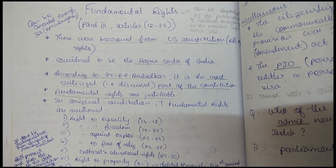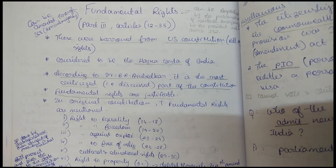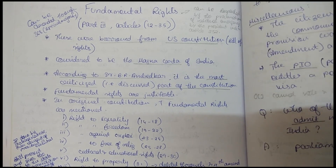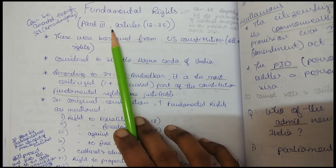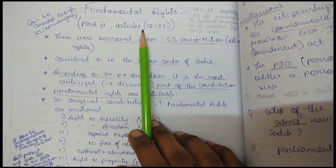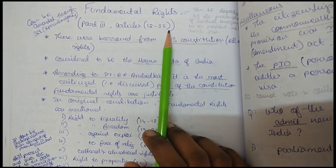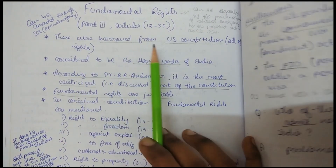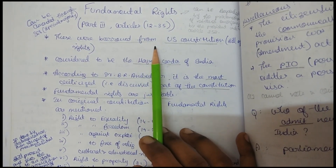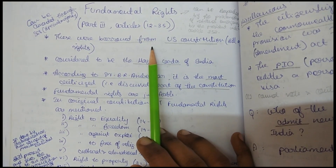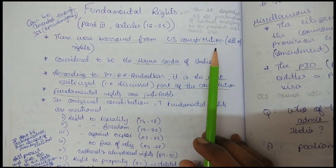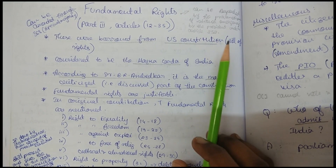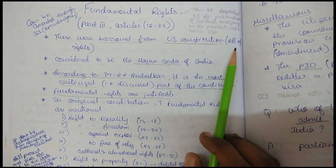Hello all. In this session we shall look into the fundamental rights of our Indian constitution. Fundamental rights are mentioned in Part 3, and the articles covered are from 12 to 35. As we have already discussed in the sources of our Indian constitution, fundamental rights are borrowed from the US constitution, where they are called the Bill of Rights.